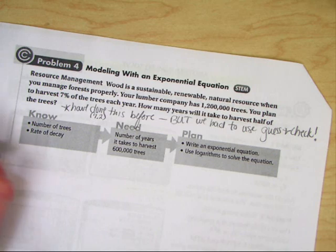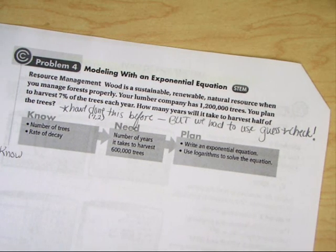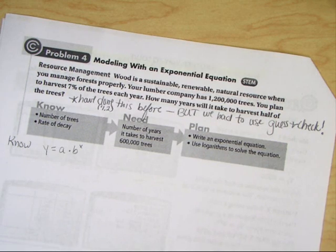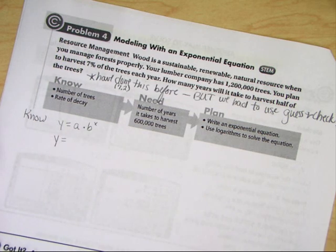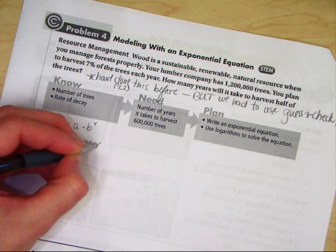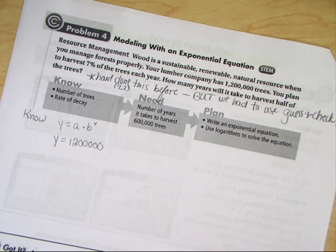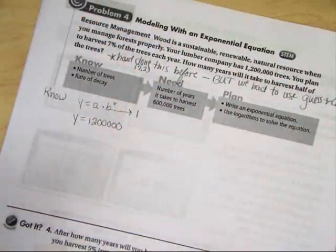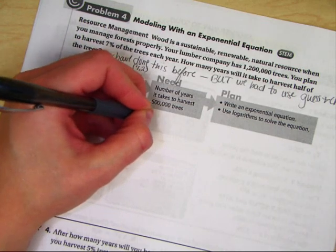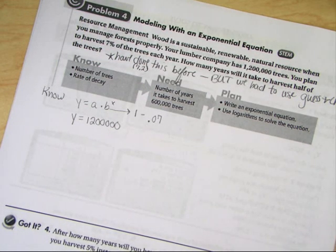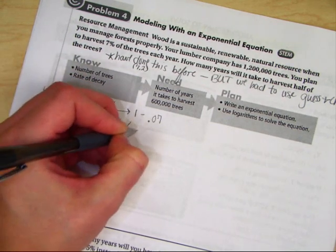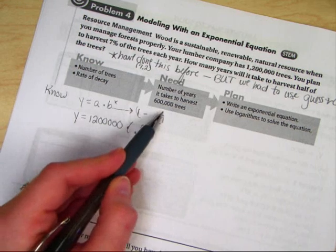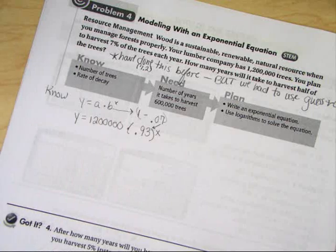Let's make our equation the way we used to. Remember: y equals a times b to the x power. Nothing's changed. So we do y equals 1,200,000 — that's the beginning amount. Now, since you are harvesting — harvesting means you're taking away — you do 1 minus 0.07, which gives b equals 0.93. So the equation is y equals 1,200,000 times 0.93 to the x power.